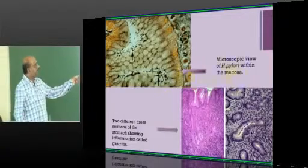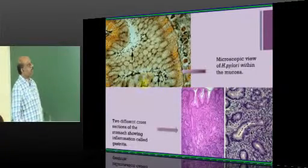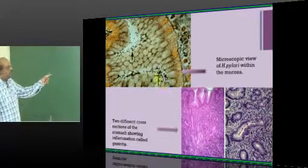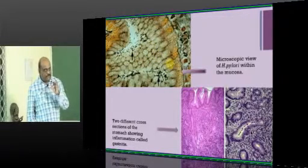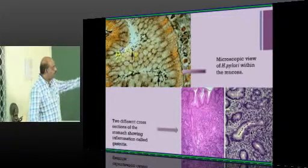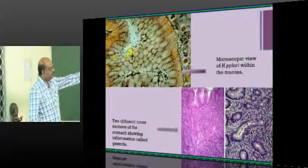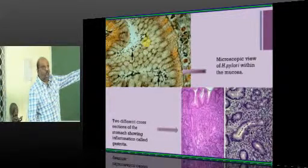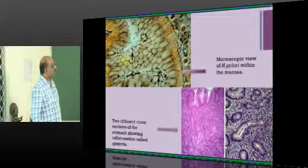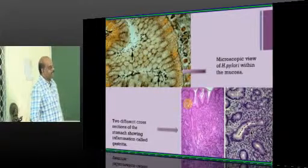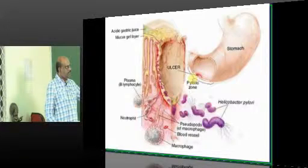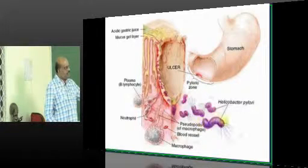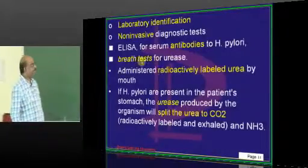This is a typical microscopic view. Microscopically, if you take a biopsy sample and look through a microscope, you can see Helicobacter pylori as comma-shaped organisms — a classic appearance to recognize. This once more illustrates Helicobacter and the development of gastric ulcer.